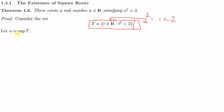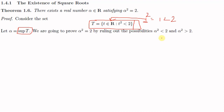Now we will show that alpha equals root 2, or equivalently alpha squared equals 2, by showing that alpha squared cannot be less than 2 and alpha squared cannot be greater than 2. First, we will show that alpha squared cannot be less than 2.